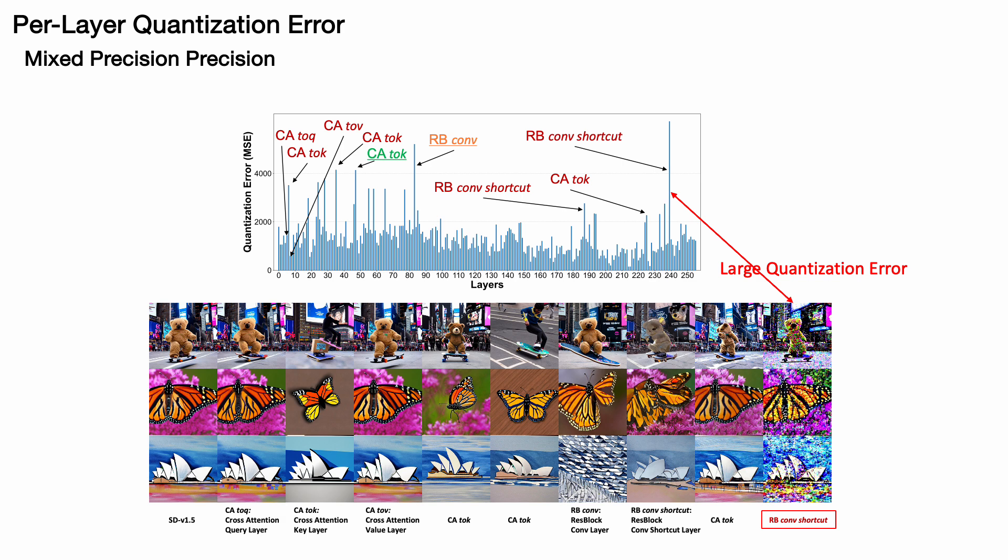At the top, we display the MSE values resulting from quantizing each layer to one bit. We have highlighted certain layers and presented the corresponding images below. These images are from the quantized model, which involves quantizing the cross-attention layers, specifically the query, key, and value layers, as well as the convolutional and shortcut layers within the residual blocks.